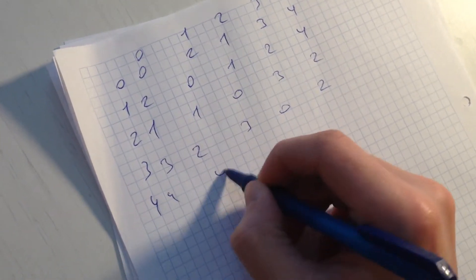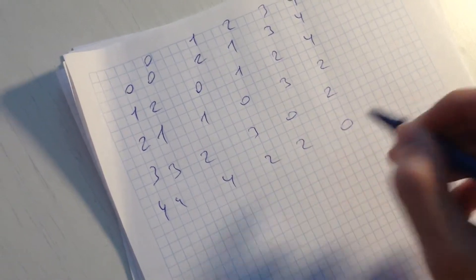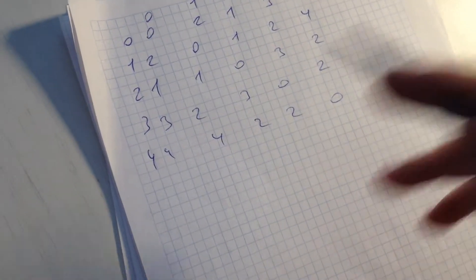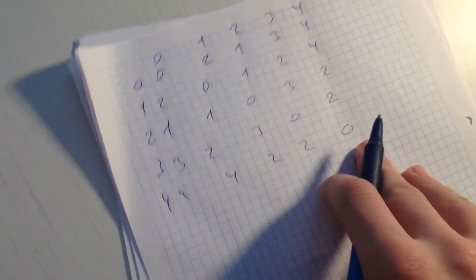It's 4, 4, 2, 2, 0. So it's our cost matrix, we can say so.